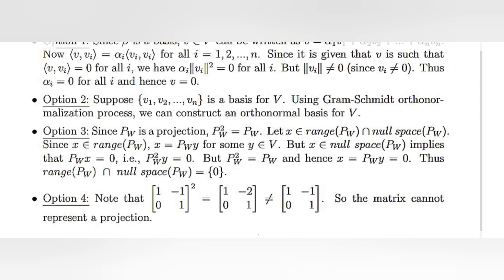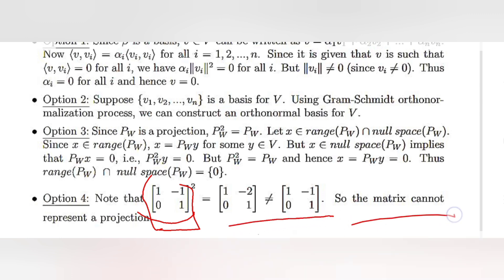For option 4: if we square the given matrix, we find that the result contains entries like (1, -2, 0, 1), which is not equal to the original matrix. Therefore, P² ≠ P, and this matrix cannot represent a projection.